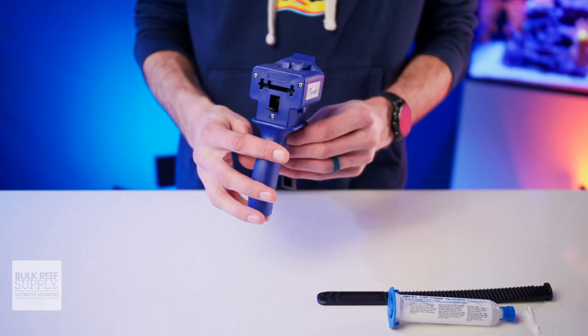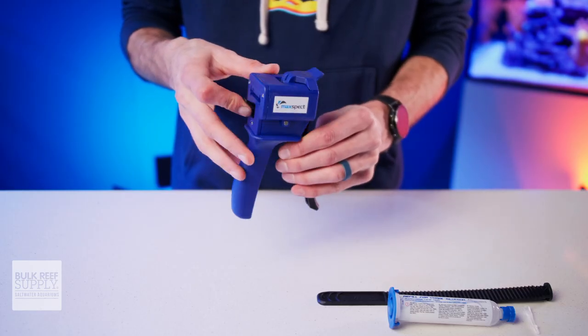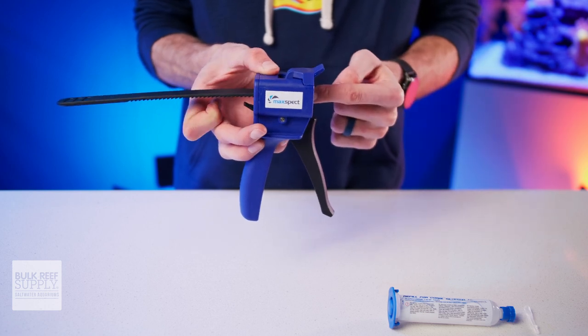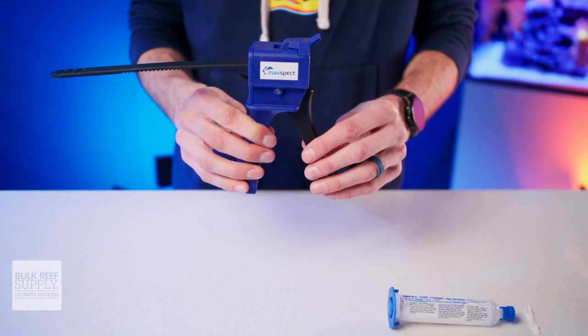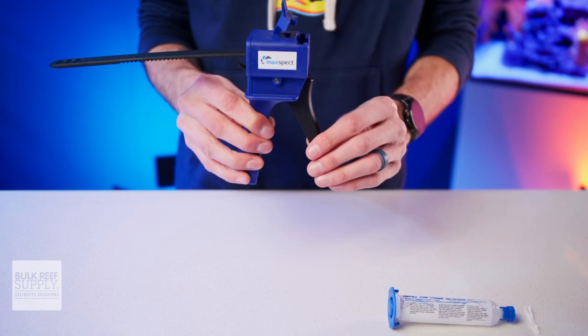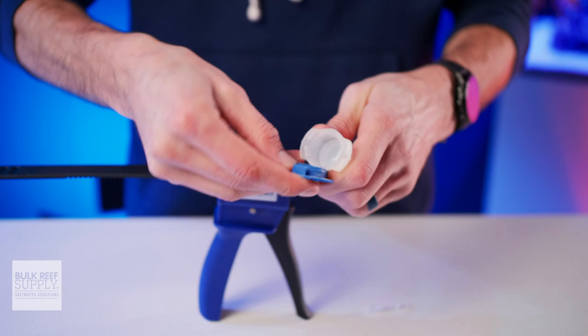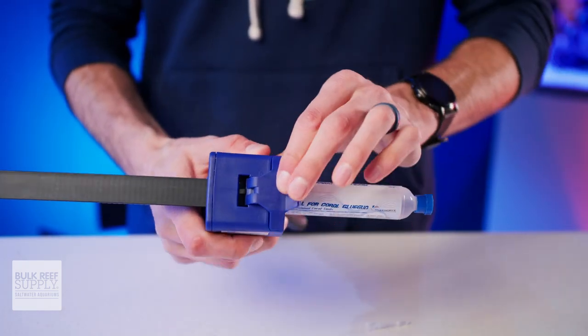To load it up, first you push up on the release on the back of the gun, and then slide the plunger in from the front, with the teeth facing downwards, until it's all the way in. Then you can let go of the release, pull up on the tab on the loading port to flip it open, then grab your tube of glue, remove the cover off of the back of the glue, then slide it into the loading port and close the tab.